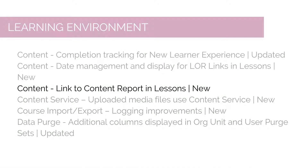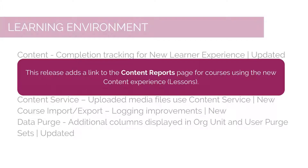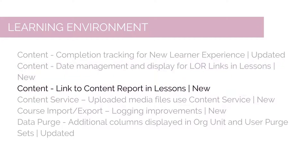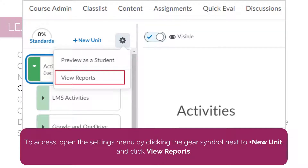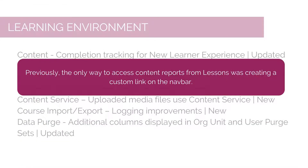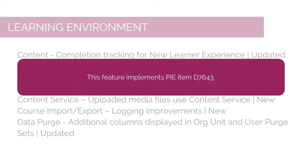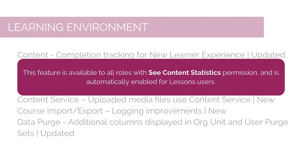This release adds a link to the Content Reports page for courses using the New Content Experience, Lessons. To access, open the Settings menu by clicking the gear symbol next to New Unit and click View Reports. Previously, the only way to access Content Reports from Lessons was by creating a custom link on the navbar. This feature implements PI Item D7643 and is available to all roles with the Content Statistics permission, automatically enabled for Lessons users.